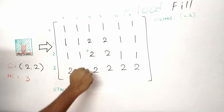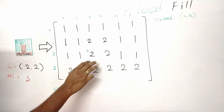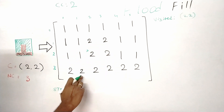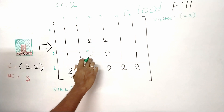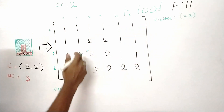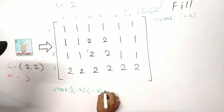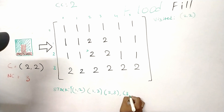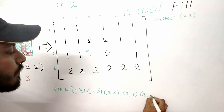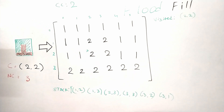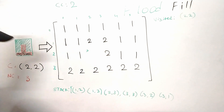The valid neighbors are those that have the same color value as the clicked cell. The clicked cell color is value two, so all neighbors with value two are valid neighbors. We add all of them to the stack: one comma two, one comma three, two comma three, three comma three, three comma two, and three comma one. We then replace the current cell's value from two to three, and take the next value from the top of the stack.